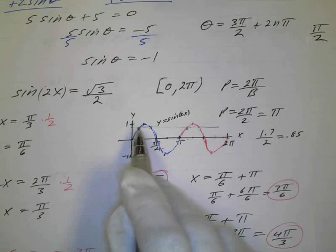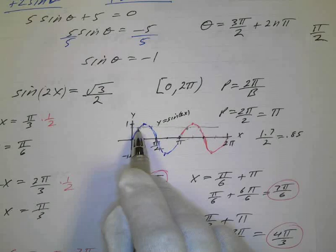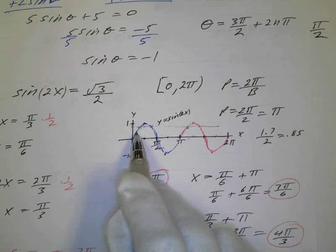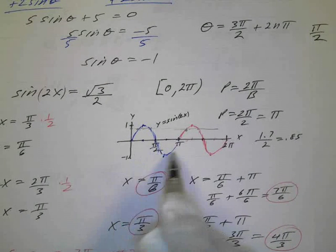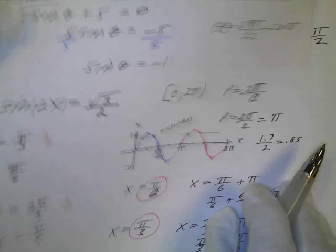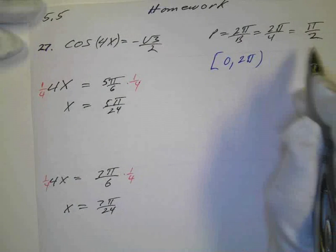But so you get the idea, if I wanted, this would be my first solution, but because of the change in period, this would be my next solution. I would just have to add to this one period. Now, this period was π. In this case, it's going to be π over 2.